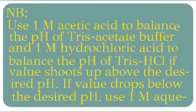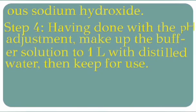If the value drops below the desired pH, use 1 molar sodium hydroxide. Having completed the pH adjustment, make up the solution to 1 litre with distilled water, then keep for use.